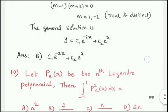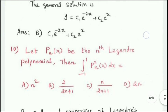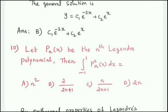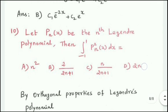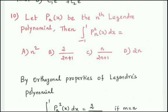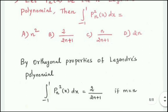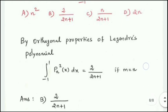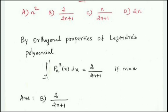Next question: let Pₙ(x) be the nth Legendre polynomial. Then the integral from -1 to 1 of [Pₙ(x)]² dx equals 2/(2n + 1) when m = n. Therefore, Option B: the answer is 2/(2n + 1).